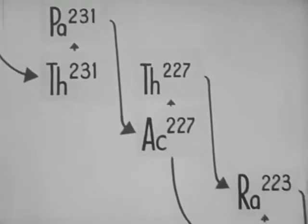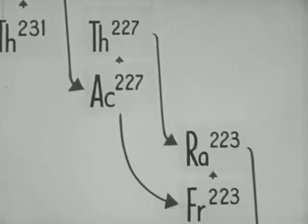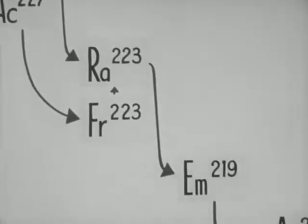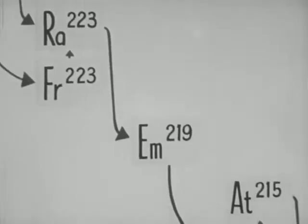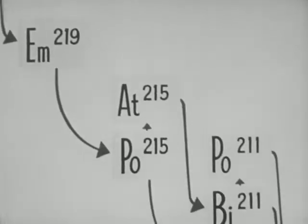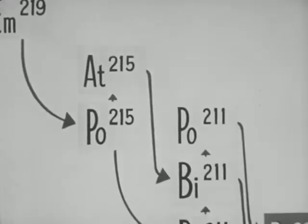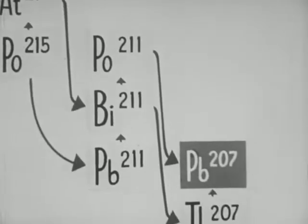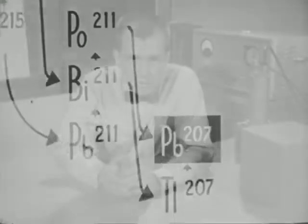Now, here we potentially have two excellent clocks for measuring long intervals of time — clocks which tick at an irregular rate, but when averaged over a large number of ticks, they are extremely accurate. They are not disturbed by changes in temperature and pressure, and under the proper conditions, they record their own ticks. The record they make is the number of lead atoms produced.